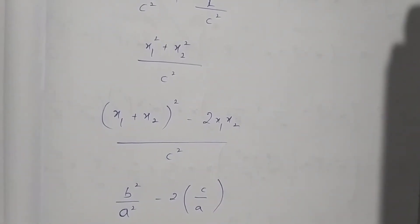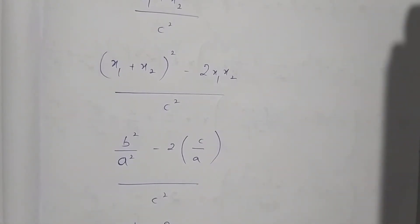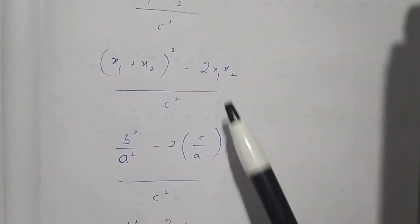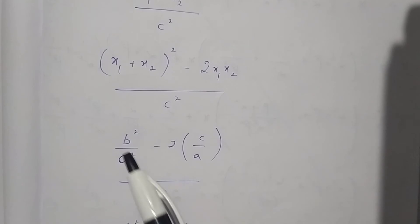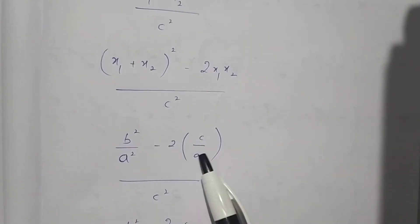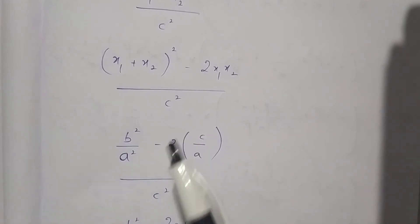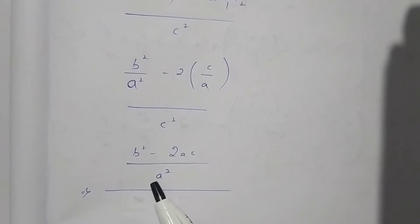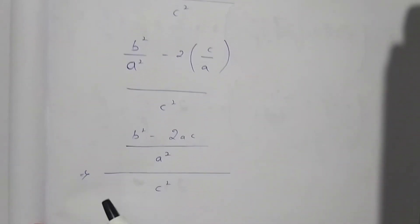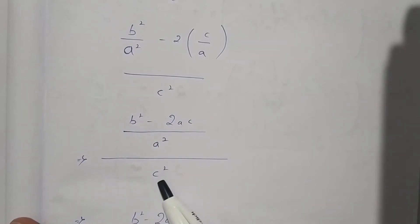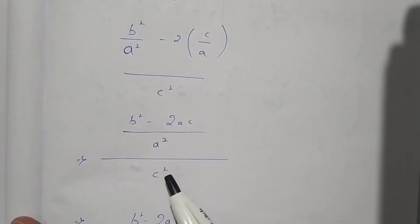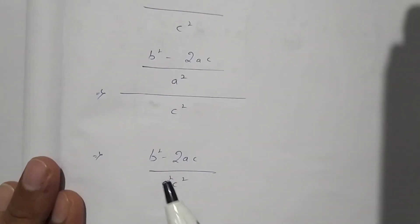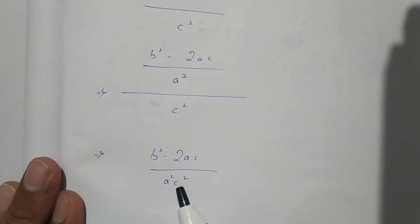Since x₁ and x₂ are roots, by Vieta's formulas, the sum of roots x₁ + x₂ = -b/a and the product x₁x₂ = c/a. Therefore x₁² + x₂² = (-b/a)² - 2(c/a) = b²/a² - 2c/a. Taking LCM gives (b² - 2ac) / a². So the full expression becomes (b² - 2ac) / a², divided by c².